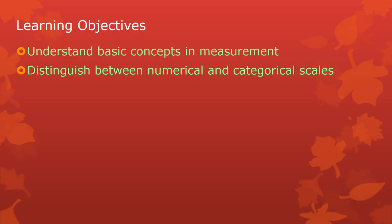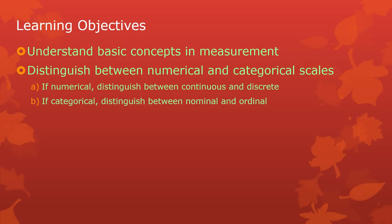I need you to distinguish between numerical and categorical scales — you need to know the difference. If it's a numerical scale, you're going to need to know whether that's continuous or discrete. That's somewhat important, but it's actually quite critically important, if it's a categorical scale, to distinguish between nominal and ordinal — between unordered categorical or ordered categorical.